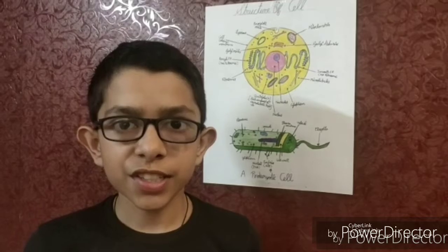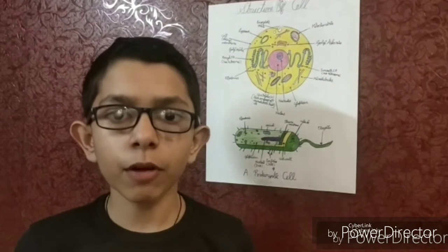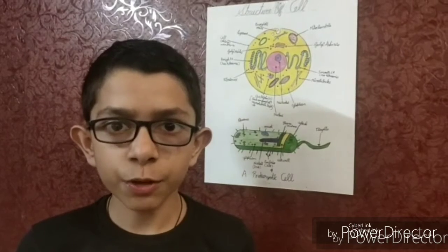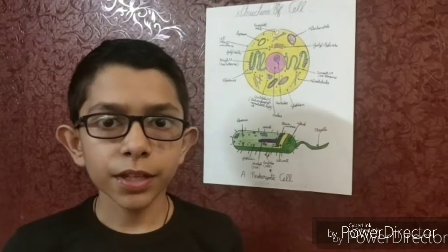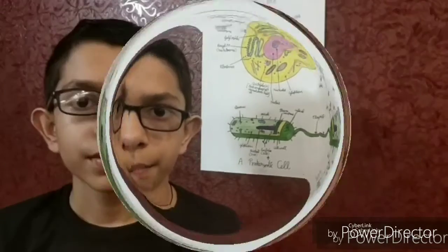The next one is the cytoplasm. It is the fluid content inside the cell which consists of each and every membrane-bound organelle. The next is the protoplasm, which constitutes the cytoplasm, the nucleus, and each and every membrane-bound organelle.